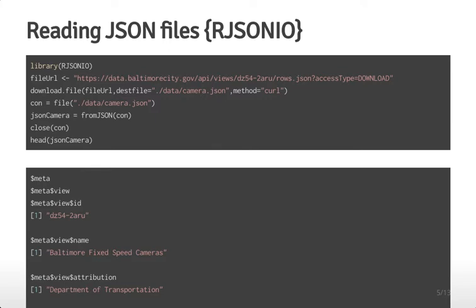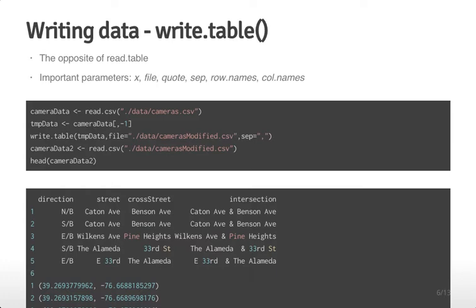Now that we've read data into R, you might want to write it back out after processing. Getting data isn't only about getting data from the internet — it might also mean saving processed data to a new file on your computer. Here we'll use read.csv to load in some data, then use write.table to write it back out after modifying it.